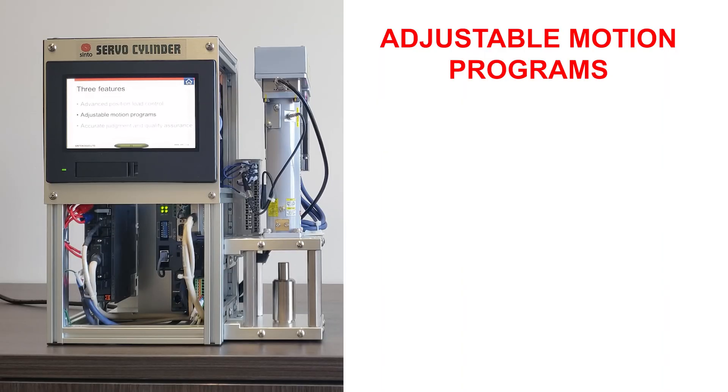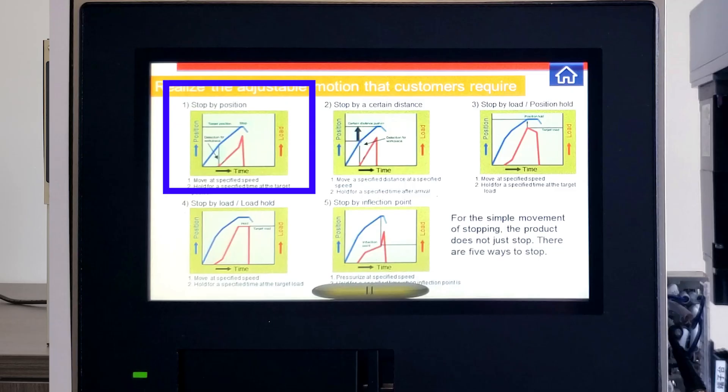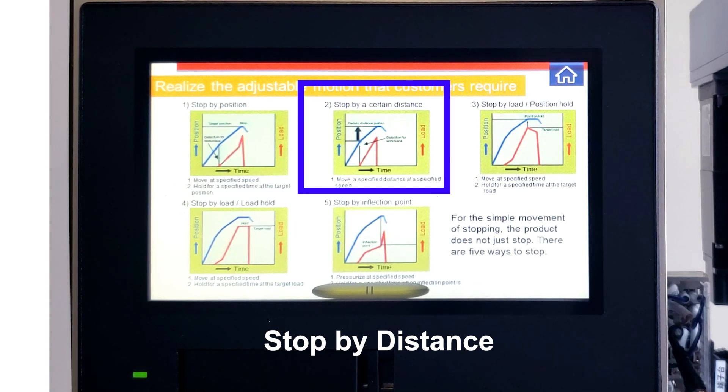The second feature is a set of adjustable motion programs. Unlike hydraulic and pneumatic cylinders that stop when they reach a limit switch, the Cinto servo cylinder has five adjustable motion programs to control the servo cylinder's stop position: stop by position, stop by distance used for multiple stops in one cycle,